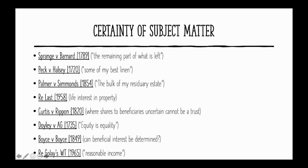A similar situation arose in Palmer v Simmons in 1854, where the wording used was 'the bulk of my residuary estate.' Again, the court held that this was too vague to identify the trust property.